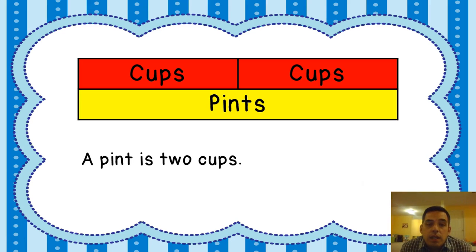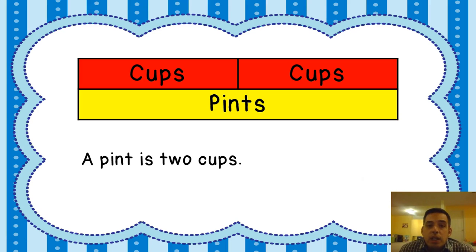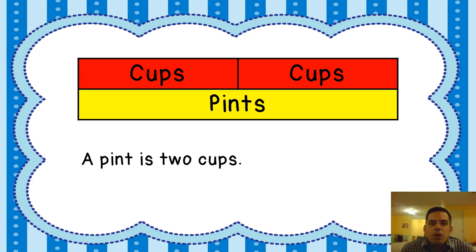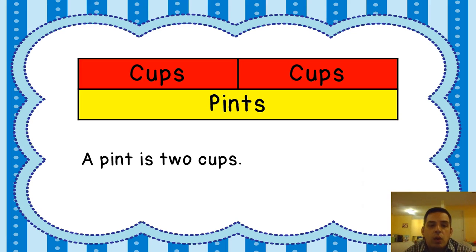The next one is a pint. A pint is two cups. You can see on our chart here that in every single pint there are two cups. So if a cup is 8 ounces, then a pint would be 16 ounces. A pint is usually about a bottle of water — if you go to the store and you buy a bottle of water, that's about that size. Or maybe a bottle of soda. So a pint is twice as much as a cup, but it's still not a whole lot.